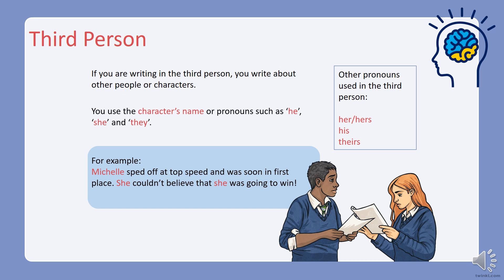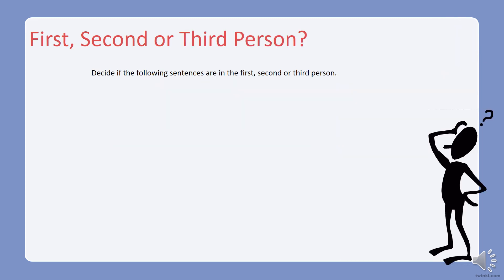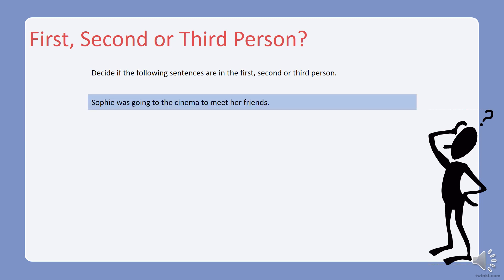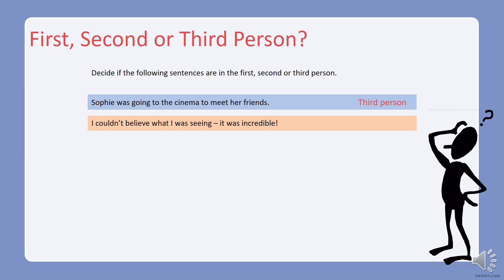Right, a little challenge for you to see if you can remember that information. I want you to decide if the following sentences are in the first, second, or third person. First sentence: 'Sophie was going to the cinema to meet her friends.' What do you think? Well done — that sentence is written in the third person, and you can tell because we have the character's name, Sophie, and we've also got the pronoun 'her'.